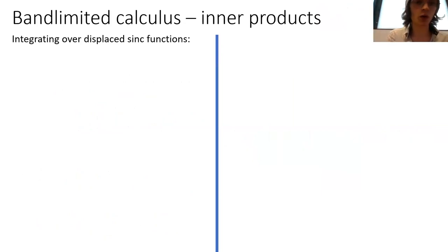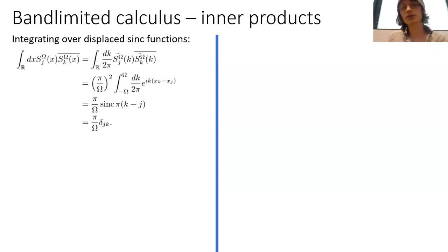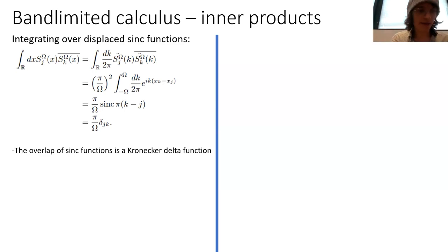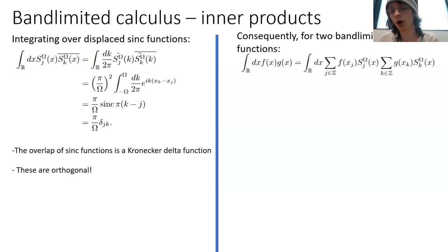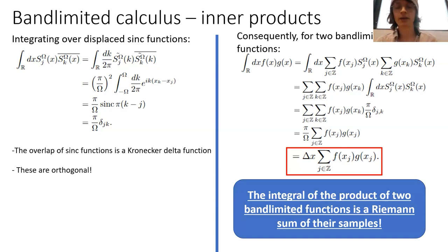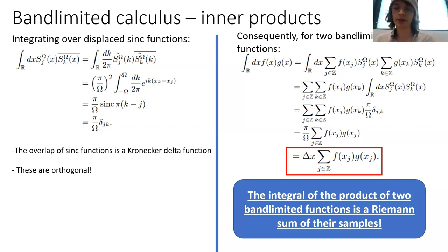Along with derivatives, we also have inner products that are usually continuous quantities, but for band-limited signals have an equivalent discrete counterpart. We can calculate this by first integrating over the overlap of sinc functions. We find that if these sinc functions are displaced by integer multiples of our lattice spacing, we get a Kronecker delta — the sinc functions are orthogonal. Consequently, the integral of the product of two band-limited functions with the same UV cutoff is equal to a Riemann sum of the product of their samples — literally a Riemann sum without taking the limit as delta x goes to zero.